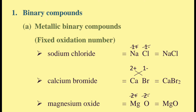For example, sodium chloride. Sodium is Na with oxidation number 1 plus. Chloride is Cl with oxidation number 1 minus. So we have 1 plus and 1 minus. The formula for sodium chloride is NaCl.